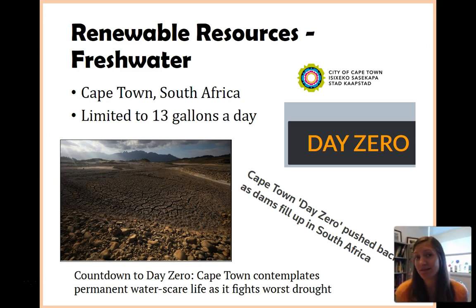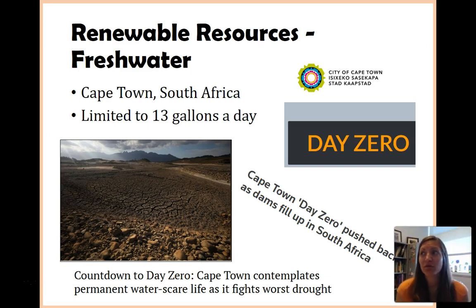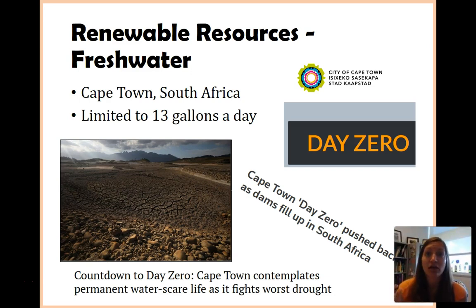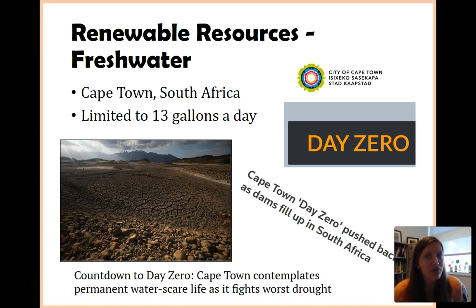Currently, Day Zero is going to be sometime in 2019, and that might push further. Now, this isn't what would happen if everyone stayed the same — this is after rationing. Currently they are rationing to 13 gallons of water a day: 13 gallons to cook with, to clean with, to bathe yourself with, to physically drink, and for using the toilets. Everything that you use water for, they get about 13 gallons a day — that is their maximum.